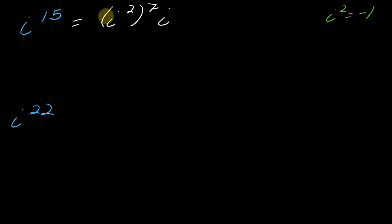And now once you rewrite a problem like this, the rest of this falls in line pretty nicely. So what is i squared? i squared we just said is negative 1. So this becomes negative 1 to the seventh times i. Now if I take negative 1 to the seventh power, is this going to be positive or negative? Well, since it's an odd power, this will stay negative. So this whole thing will just equal negative i. So this is the idea.